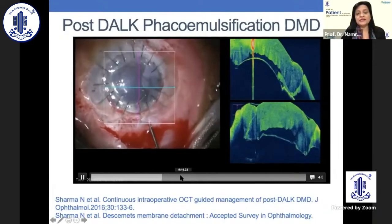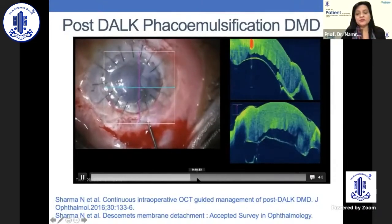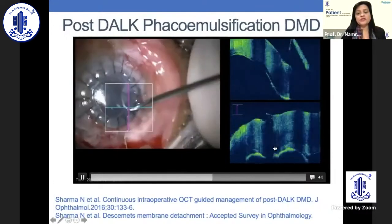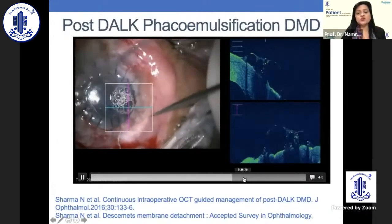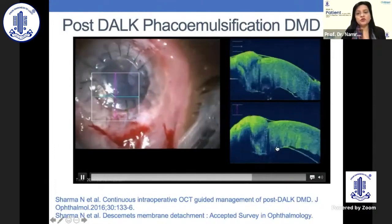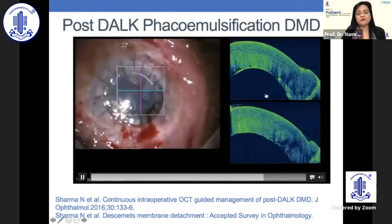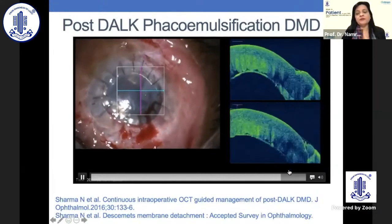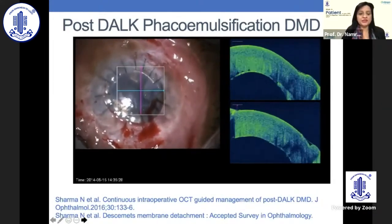This is a case of DALK where Descemet's membrane detachment has occurred. Air bubble is put, but even after the air bubble, a shallow detachment remains. So intrastromal drainage is performed from above, and with intracameral air bubble relief, the membrane gets pretty much attached.